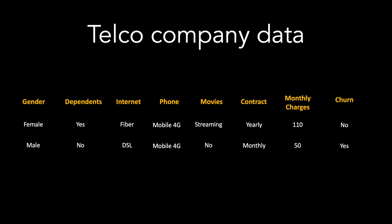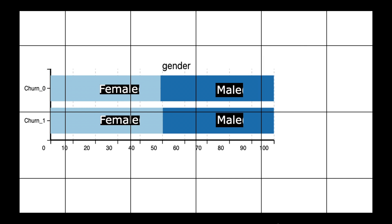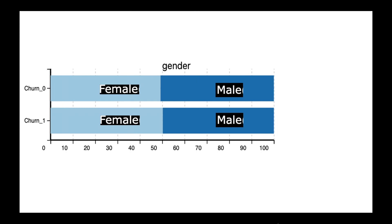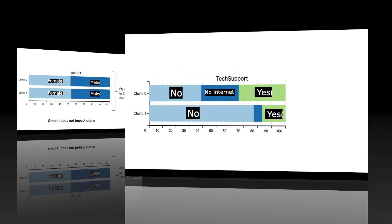One of the useful data exploration techniques is analyzing the categorical or non-numeric data versus the target variable, which is churned or not churned. Shown here is an example of gender versus the target variable. We see a very similar pattern for churners and non-churners — the proportion of female versus male is equivalent. This means that gender does not have an impact on churning.